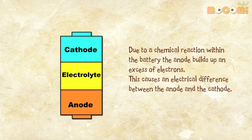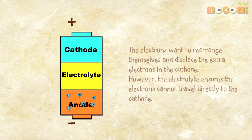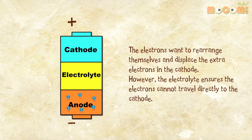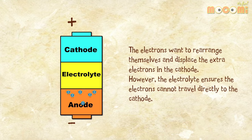Due to a chemical reaction within the battery, the anode builds up an excess of electrons. This causes an electrical difference between the anode and the cathode. The electrons want to rearrange themselves and displace the extra electrons in the cathode. However, the electrolyte ensures that the electrons cannot travel directly to the cathode.